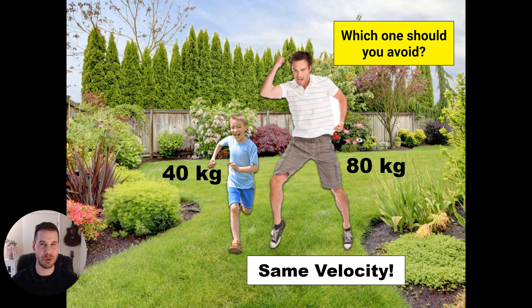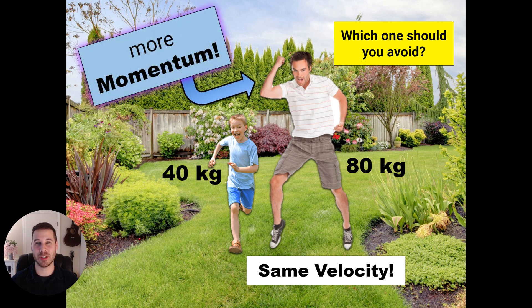Which one should you avoid? Well, there's probably a few reasons that you'd want to avoid creepy uncle Todd. But in this case, scientifically, it's because creepy uncle Todd will have more momentum and you might sustain more injuries with creepy uncle Todd knocking into you than little cousin Jimmy. So more mass seems to suggest more momentum.